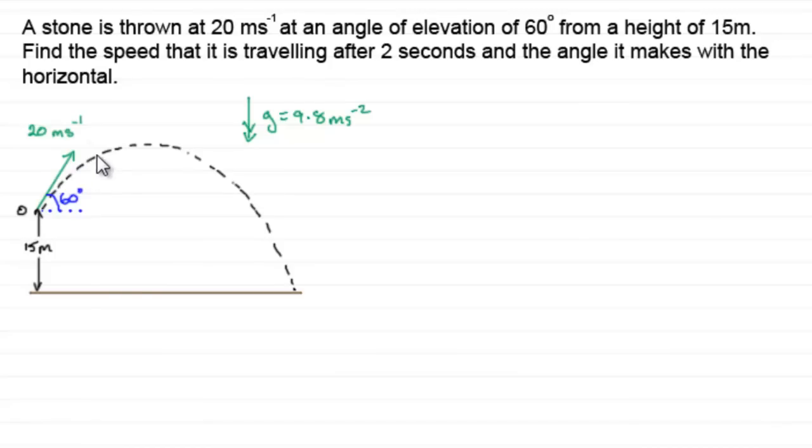So let's suppose the particle is at this point when t equals 2 seconds. And that means its speed is directed at a tangent to the curve. It's going in that direction. Let's call it v, and we've got to find this, and we've got to find out what angle it makes with the horizontal.